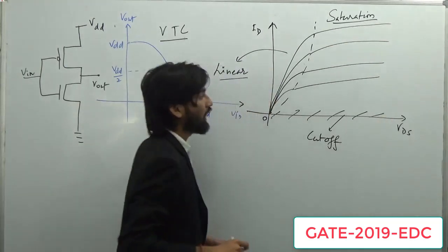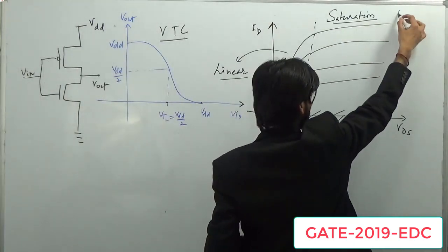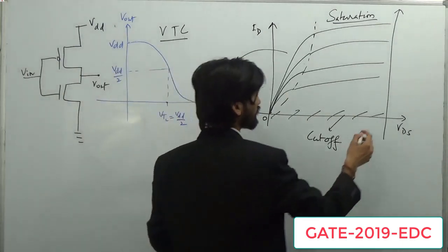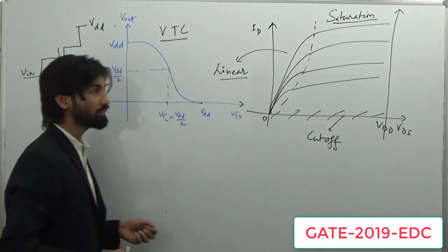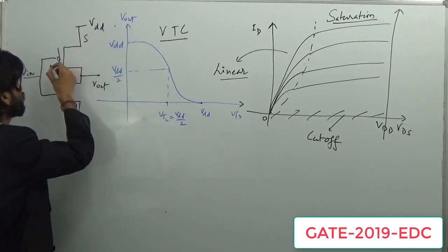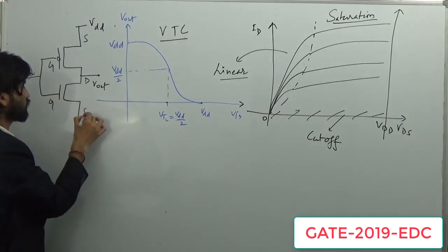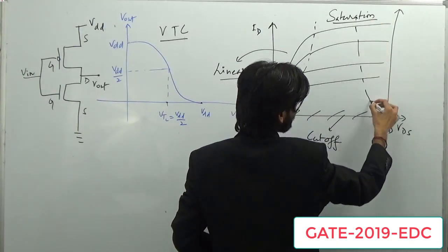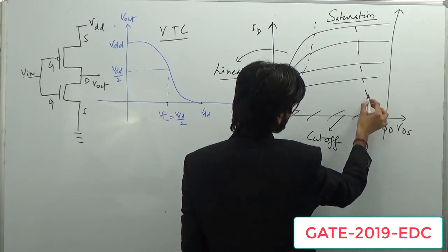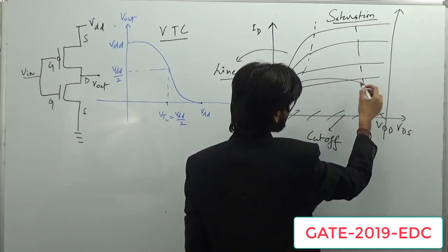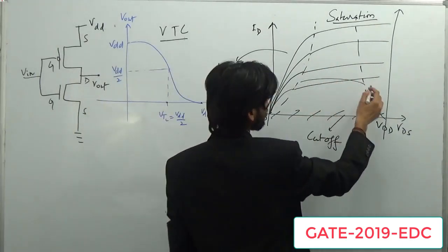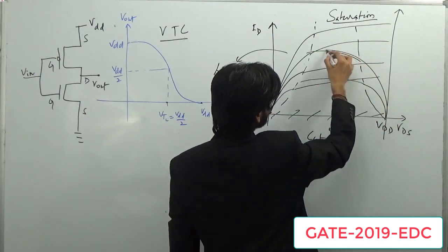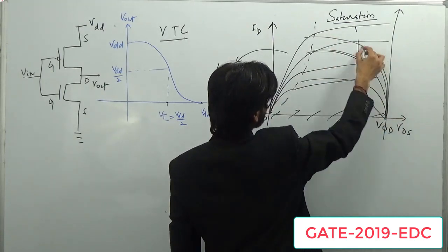If we plot the IV characteristic for the PMOS transistor on the same graph, the reference point will be VDD. For PMOS, the source is connected to VDD, this is the gate, and this is the drain. So the reference point is VDD. Again, there will be a parabola-shaped curve, and for different VGS values — different input values — we plot the characteristic.